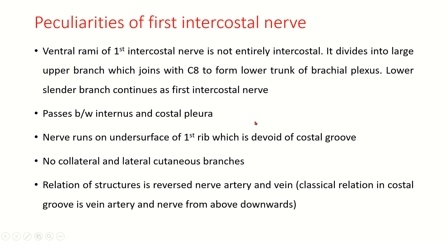Peculiarities of the first intercostal nerve: the ventral ramus is not entirely intercostal. It divides into a large upper branch joining C8 to form the lower trunk of the brachial plexus, and a smaller lower branch continuing as the first intercostal nerve proper. It passes between internus and costal pleura with no intimus muscle present. The nerve runs on the undersurface of the first rib, which is forward of the costal groove. There are no collateral or lateral cutaneous branches. The arrangement of structures is reversed — it is nerve, artery, and vein (rather than the typical vein, artery, nerve).